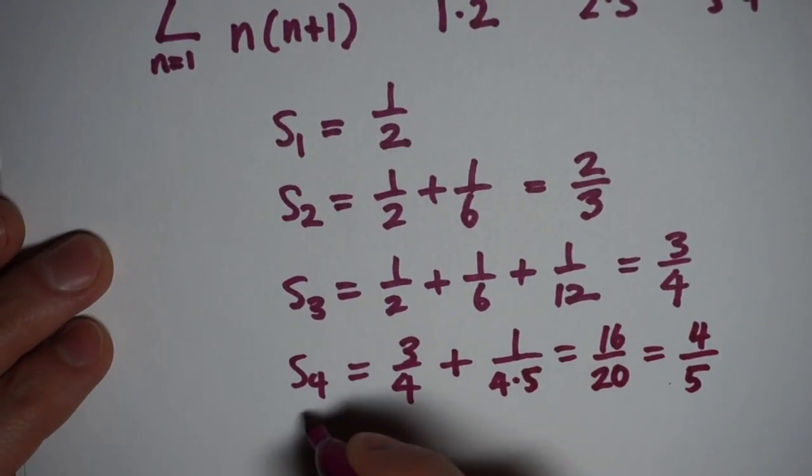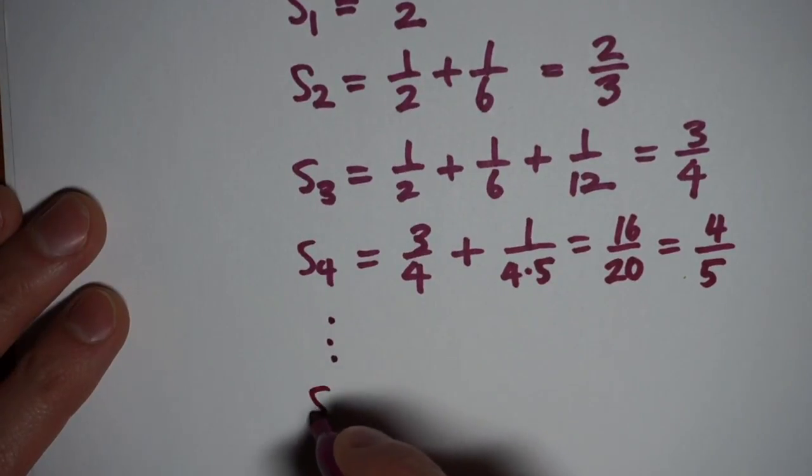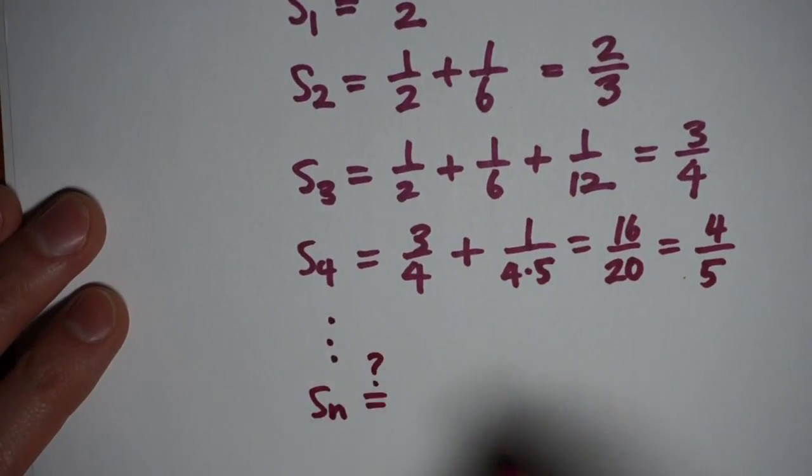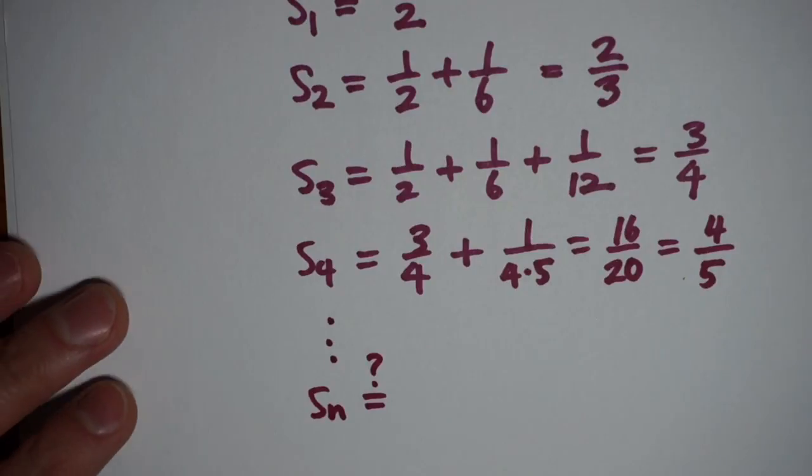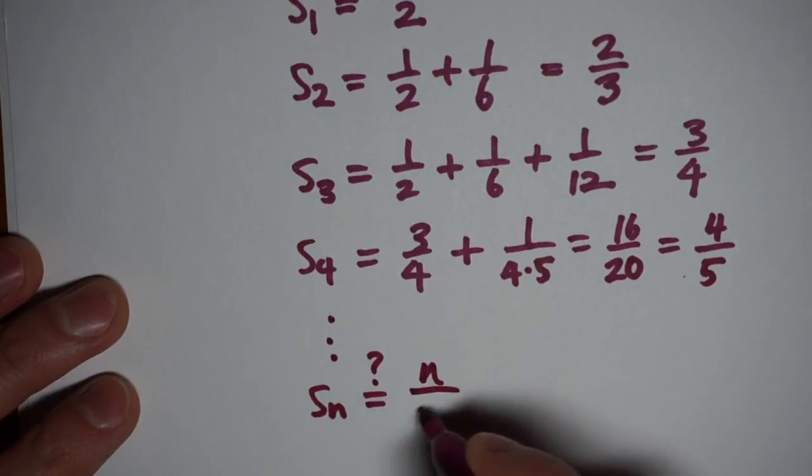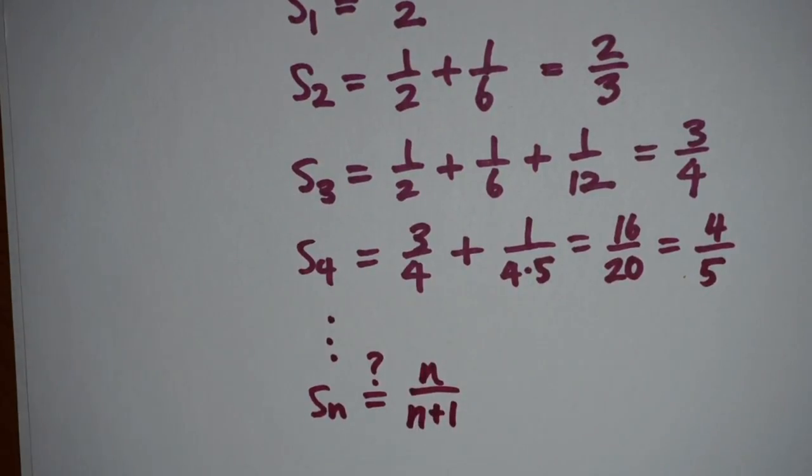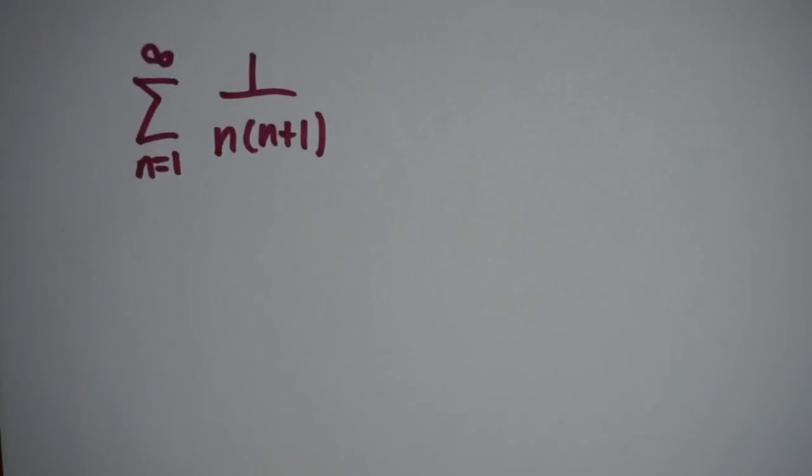Our n-th partial sum, our S sub n, is going to be, maybe, n over n plus one. In order to actually prove this, we would have to do something additional, something like induction or something a little bit easier to look at.